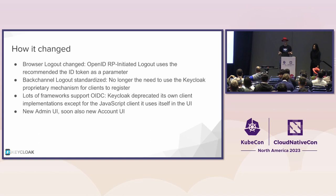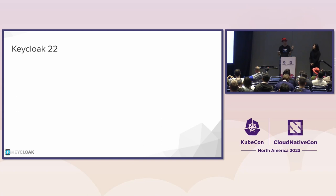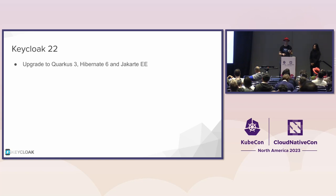Over time, the UIs have been remodeled multiple times. At the moment we are at admin UI version 2, and account UI version 3 is coming up. The world keeps changing. With the latest version, Keycloak 22, you will see that we upgrade to Quarkus 3, Hibernate 6, and Jakarta EE. Inside Keycloak it's Java; on the outside, on the web, it's JavaScript in the front-end.